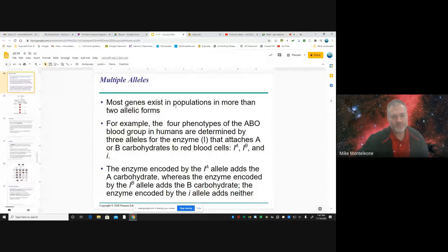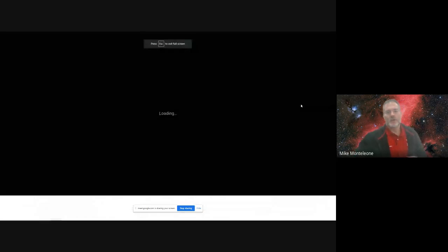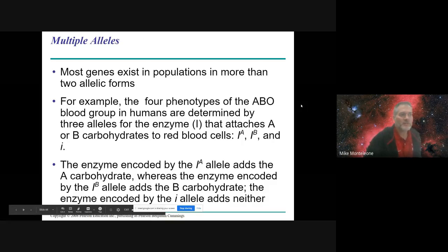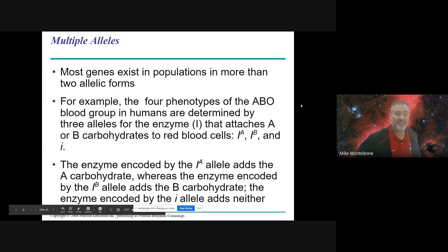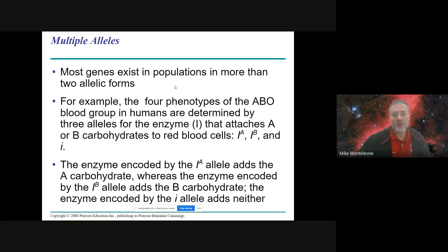So we're talking about co-dominance when both alleles get expressed, incomplete dominance where the two traits for the two different genes blend. Well, here's a case, unlike Mendel's traits in his pea plants that he looked at, where there was just one option or the other. It was either purple flowers or white flowers, green seeds or yellow seeds.